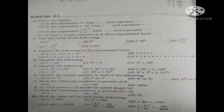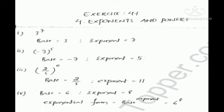First question: in part 1, there is 3 raised to the power 7, so you have to write the base and the exponent. Here base is 3 and exponent is 7. Second part: base is minus 7 and the exponent is 5. Third part: base is 2 upon 5 and exponent is 11.